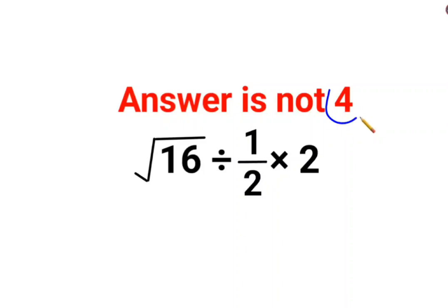Welcome everyone. So yes, a lot of people thought that the answer for this one is supposed to be 4 because half multiplied by 2 is cancelled. Root of 16 is 4 divided by 1. Answer is 4.